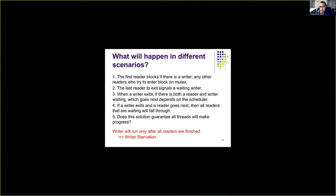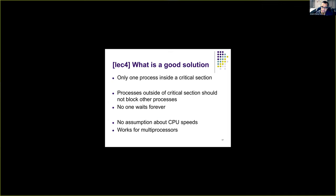Although this solution looks good, it leads to writer starvation. If there are 10 readers and a writer finishes, and then a reader gets access to the data object, all other readers just follow because the first reader blocks block_right and only the last reader unblocks it. So writers may never get access. As we saw in previous lectures, this is undesirable — we want fairness and bounded waiting.